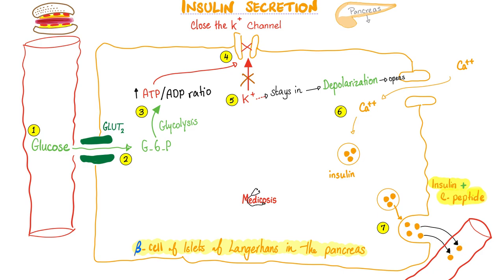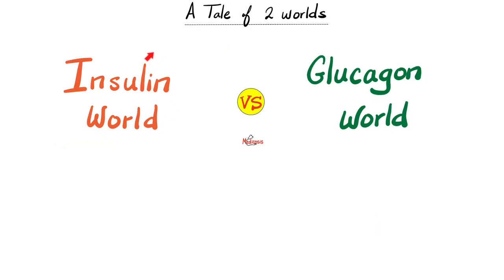Now insulin is in the bloodstream. Insulin will accomplish many things, including taking that glucose by the hand and saying: 'Hey glucose, I want you to leave the bloodstream and go into the cell.'